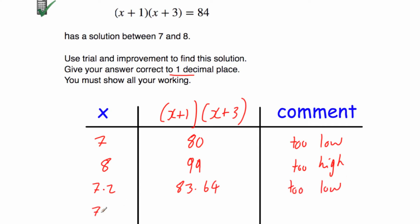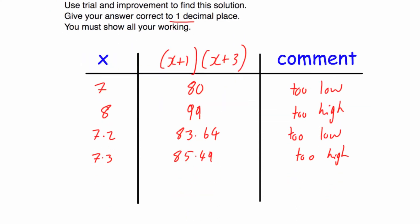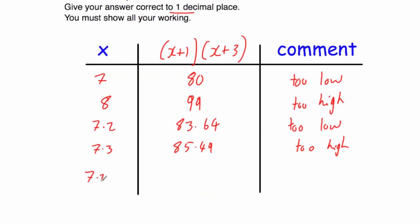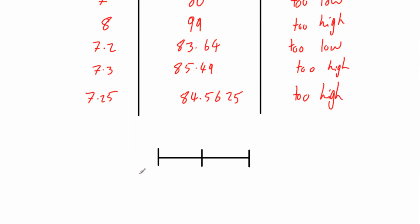Let's try 7.3: that gives 85.49 — too high. So let's do the checker 7.25: that gives 84.5625 — too high. So 7.2 is too low, 7.3 is too high, and 7.25 is also too high. The answer is closer to 7.2 than to 7.3. So the answer is 7.2.